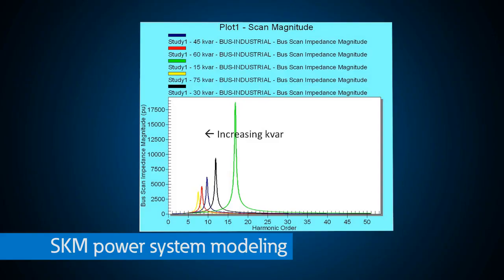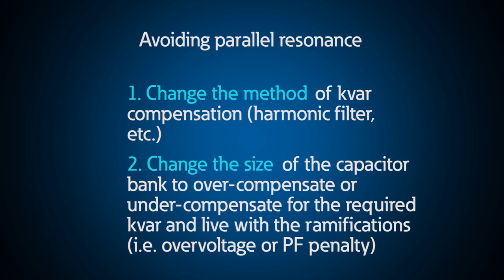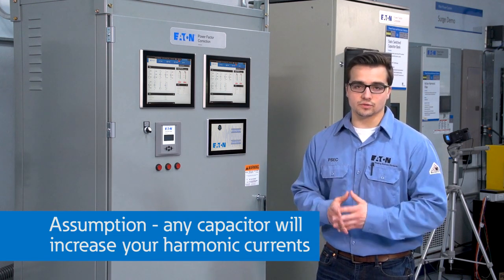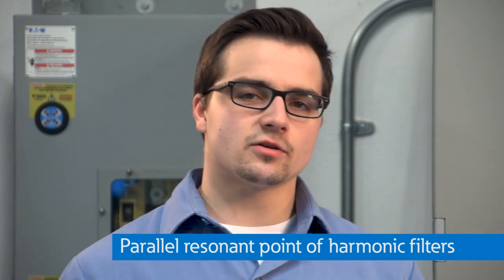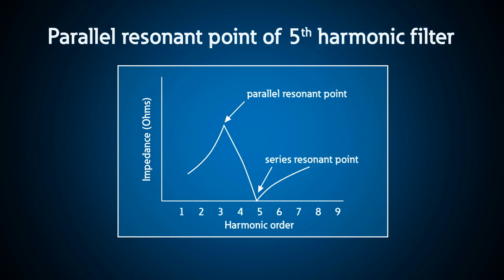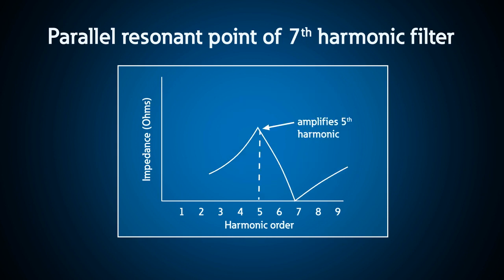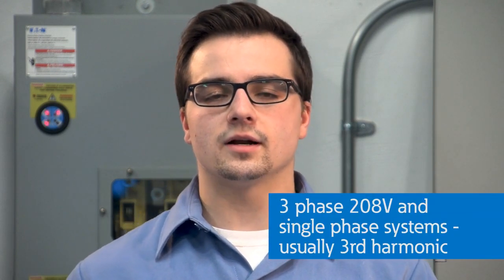Power system modeling programs like SKM can help you visualize the effects of resonant circuits and the amplification factor. This SKM frequency scan curve for our demo system illustrates the points at which various stages of capacitors will create problematic conditions. Avoiding parallel resonance can be done by changing the size of the capacitor, but then you may have other issues with power factor penalties. You can assume that any capacitor will always increase your harmonic current on the system — the question is how close are you to resonance and how much will harmonic currents increase? Another important thing to consider is the parallel resonant point of harmonic filters, which in general is one or two harmonic orders less than the tuning point. So for a 5th harmonic filter that would be around the 3rd or 4th, but for a 7th harmonic filter the parallel resonant point is just above the 5th harmonic. This illustrates a specific problem with multi-stage filters where the tuning point must be at the lowest expected harmonic — usually 5th harmonic for three-phase loads and 3rd harmonic for single-phase loads.